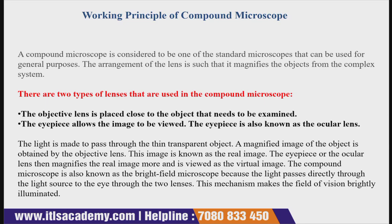Light is made to pass through a thin transparent object. The magnified image of the object obtained by the objective lens is known as the real image. The eyepiece or ocular lens then magnifies the real image, and it is viewed as a virtual image. The compound microscope is also known as a bright-field microscope because the light passes directly from the light source through both lenses, making the field of vision brightly illuminated.